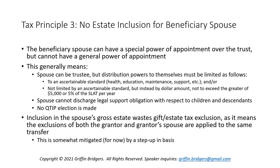You either have to limit distributions by an ascertainable standard — such as health, education, maintenance, support, or general welfare — or limit by a dollar amount not exceeding the greater of $5,000 or 5% of the SLAT per year. You can use either standard in isolation or combine them, but if a spouse can exceed those standards, they could be deemed as having a general power of appointment. You also want to make sure the spouse cannot, through a power of appointment, discharge any legal support obligation with respect to children and descendants. And you want to make sure no Q-TIP election is made, as the Q-TIP election avoids the biggest issue here — the potential for wasting of exclusion.